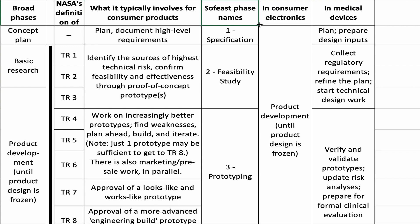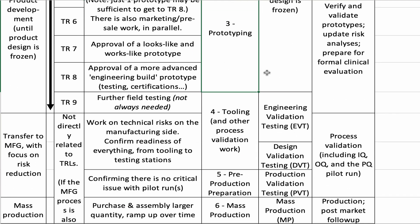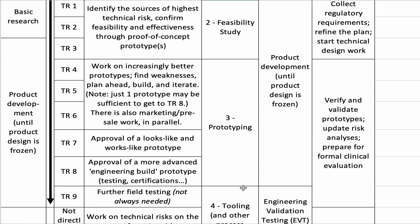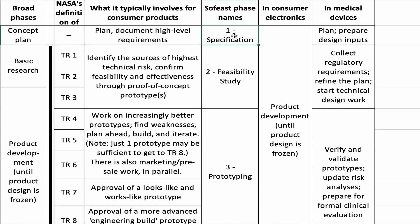When we develop new products, we have a very simple way of calling this: specification, feasibility study — which can include proof-of-concept prototypes — prototyping, tooling, and what one might call process validation, a lot of work here. Pre-production preparation to make sure you get to the state where you are ready for mass production, really boiling down all of these steps. You get to these six phases that make a lot of sense for our projects so far.